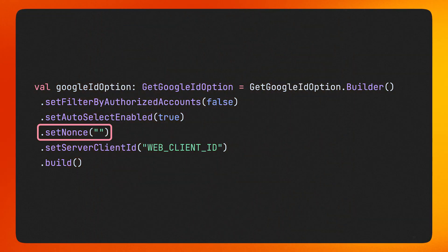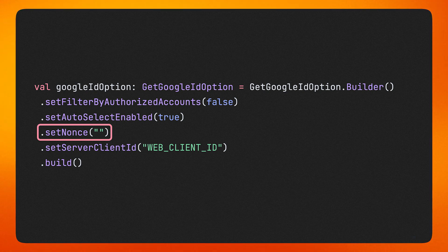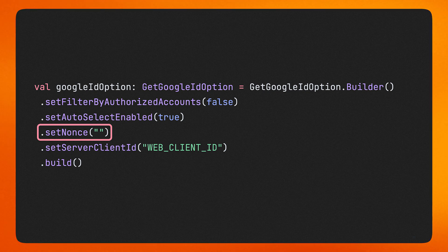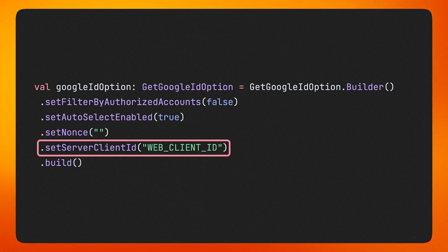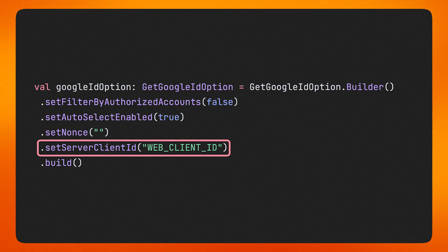To improve sign-in security and avoid replay attacks, you should also include a nonce in each request. Using the nonce to verify each request is unique on the server prevents replayed requests that can use the same value. Last, make sure to use the SetServerClientID method to specify the web client ID of your app. With these configurations, you should have the tools to create a great sign-up and sign-in flow using Sign in with Google.